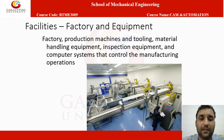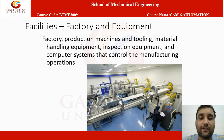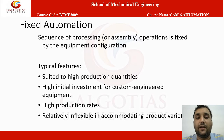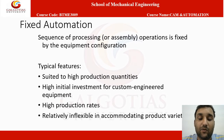Facilities, factory, and equipment include production machines and tooling, material handling equipment, inspection equipment, and computer systems that control manufacturing operations. In fixed automation, the sequence of processing or assembly operations is fixed by the equipment configuration. Typical features include suitability for high production quantities, high initial investment for custom-engineered equipment, high production rate, and relatively inflexible accommodation of production variety.